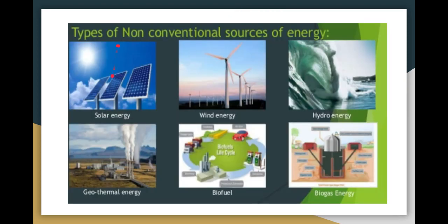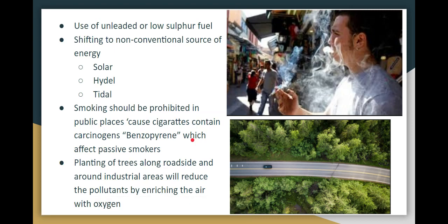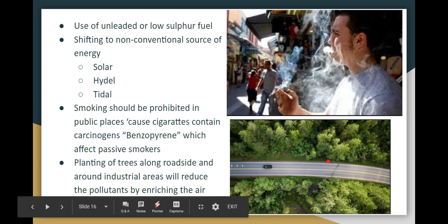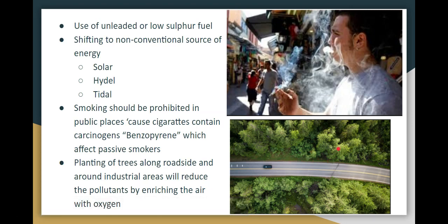Non-conventional energy sources — such as solar energy, wind, hydro, and geothermal — should be used as a shift away from fossil fuels. Smoking is prohibited in public places because cigarettes contain a carcinogen called benzopyrene, which affects passive smokers as well. Trees should be planted along traffic roads and near industrial areas to reduce pollutants.